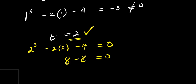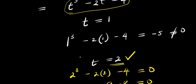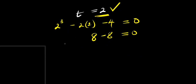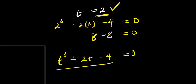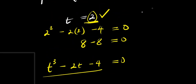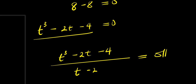To find the other solutions, we are going to divide the expression t cubed minus 2t minus 4 by the factor corresponding to this solution. Since t equals 2, that means t minus 2 equals 0, so the factor is t minus 2. We divide the expression by t minus 2 to get the other factors. I am going to use the synthetic division method.